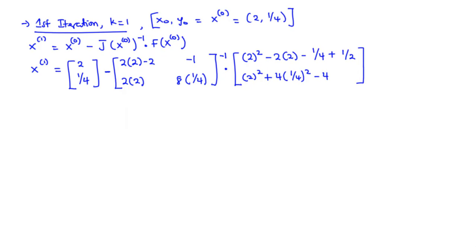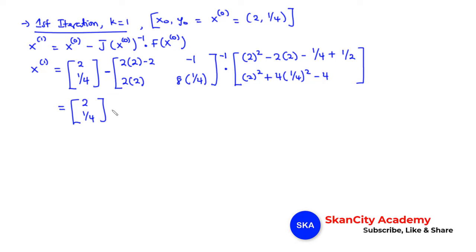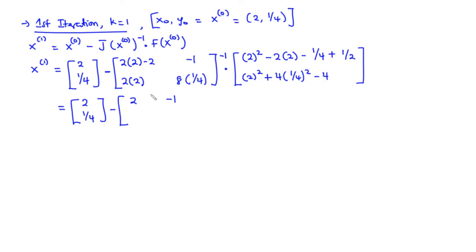Proceeding with the simplification: x⁽¹⁾ = [2, 1/4] minus the inverse of the Jacobian [2, −1; 4, 2] times the function vector. When we compute f₁ = 4−4−1/4+1/2 = 1/4, and f₂ = 4+1/4−4 = 1/4. So the function vector is [1/4, 1/4].